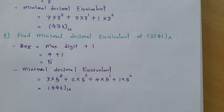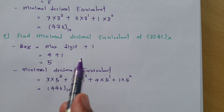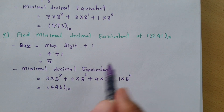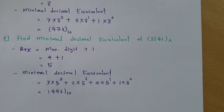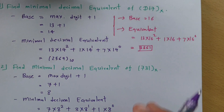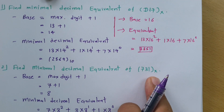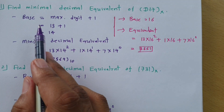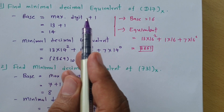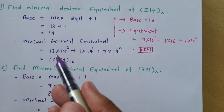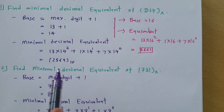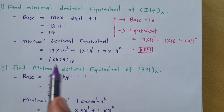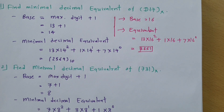If you use a base greater than the minimum, the decimal equivalent will increase. So for minimal decimal equivalent, we first identify the least valid base, which is maximum digit plus 1. Then we substitute that base and multiply each digit by the corresponding power of the base, sum them up, and that result is the minimal decimal equivalent of the given number.